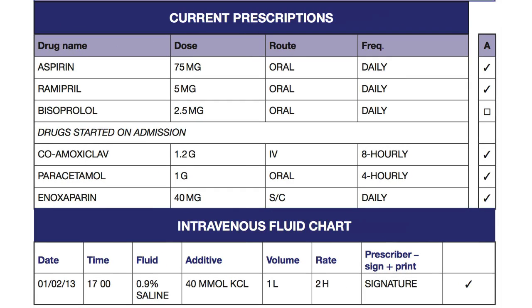Let's now review the answer, taking each drug in turn. First, aspirin — this patient has presented with haemoptysis, so aspirin should be stopped. Looking further down the chart, enoxaparin, a low molecular weight heparin, should also be stopped. Next, ramipril, an ACE inhibitor — the patient has hyperkalaemia with a potassium of 5.9, and in this setting an ACE inhibitor is not appropriate and may be contributing to his renal failure; this should be stopped. There are no current contraindications to his regular bisoprolol, so this may be continued.